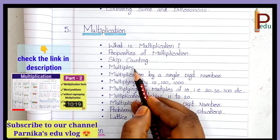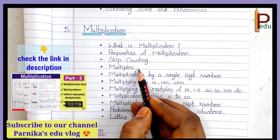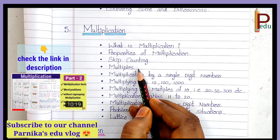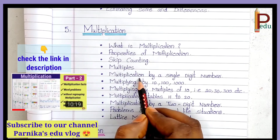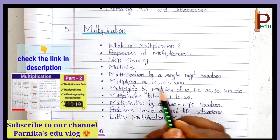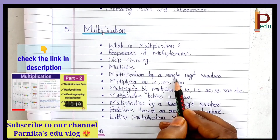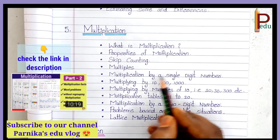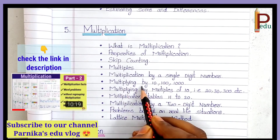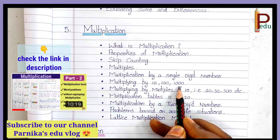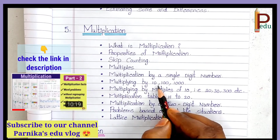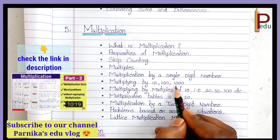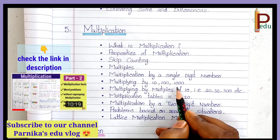Next, Multiples — finding multiples of a number. Next, Multiplication by a Single-Digit Number — how to do multiplication with a single-digit number. Next, Multiplying by 10, 100, and 1000 — how to easily multiply any number by 10, 100, or 1000.